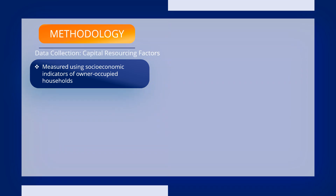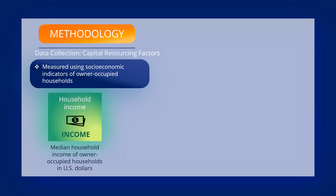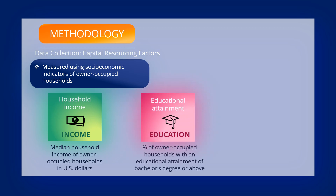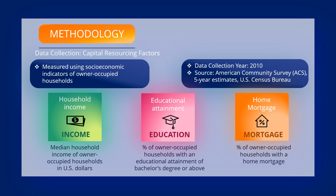Capital resourcing factors were measured for owner-occupied households based on socioeconomic indicators. For example, income was defined as the median household income of owner-occupied households in U.S. dollars. Education was defined as the percentage of owner-occupied households with an educational attainment of bachelor's degree or above. Mortgage was defined as the percentage of owner-occupied households with a home mortgage. Data was collected for the pre-disaster year 2010 from the American Community Survey published by the U.S. Census Bureau.